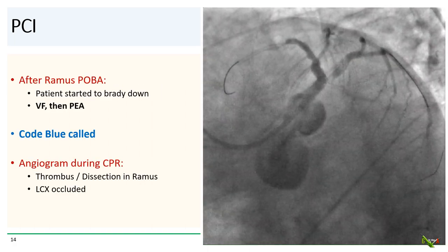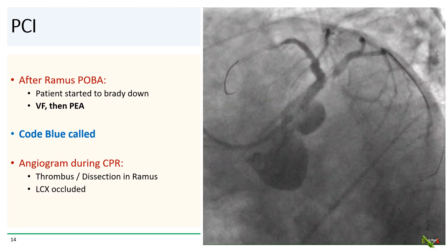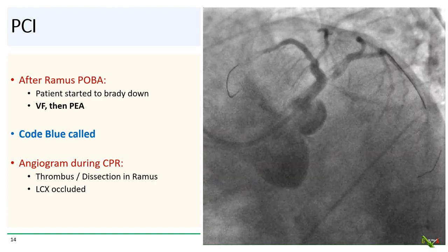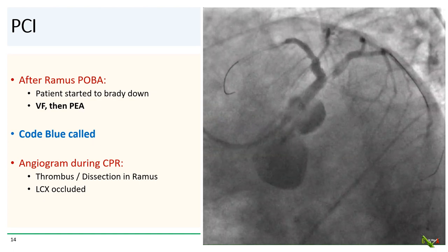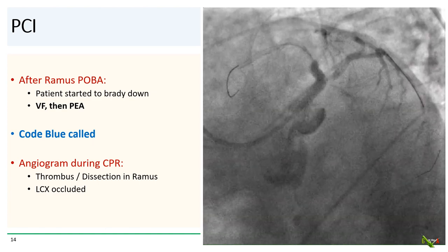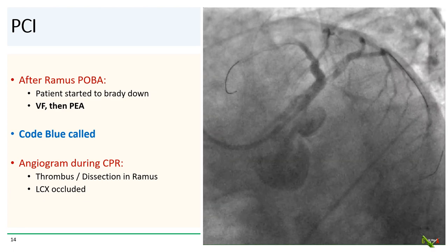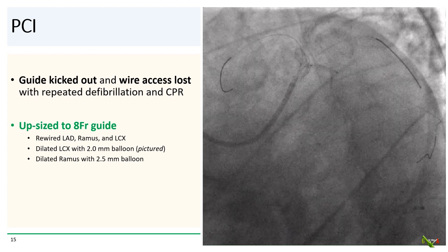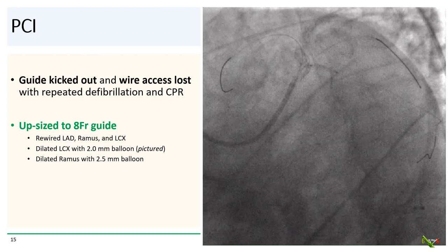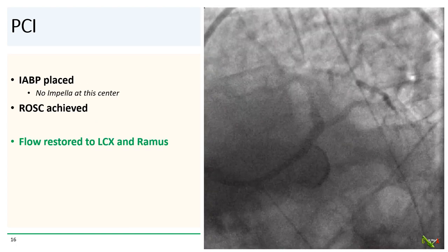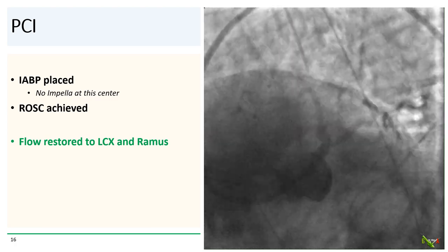But after dilating the ramus, the patient started to brady down. He then arrested — he had ventricular fibrillation, which was immediately shocked, and then went into PEA. Code blue was called and CPR was started. We took an angiogram during chest compressions, and as you can see, there was now sluggish flow in the LAD, thrombus and possibly a balloon dissection in the ramus, and the dominant circ was now occluded. With repeated defibrillations and CPR, the guide catheter kicked out and all three wires came out. We then decided to upsize to an 8 French guide, and under duress, in between chest compressions, quickly rewired the LAD, ramus, and circumflex. We were then able to dilate the circumflex with a 2.0 millimeter balloon and the ramus with a 2.5 millimeter balloon. Fortunately, at this point, we got ROSC back.